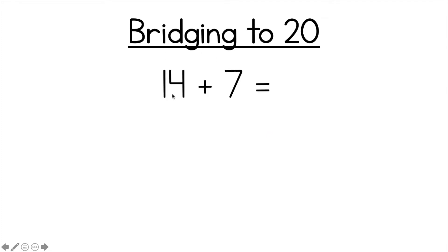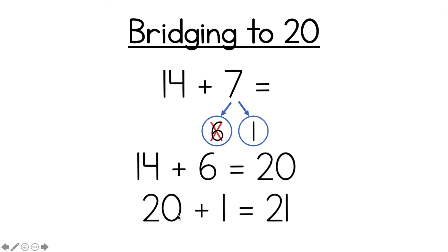Last one. So 14 plus 7. My friend of 20 for 14 would be 6. So I'm going to break 7 into 6 and what else do I need to make 7? 1. So it turns into 14 plus 6 is 20. How good is that? Makes friends of 20. And then all I have to do now is keep that big number. 20 plus 1 equals 21.